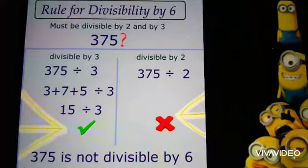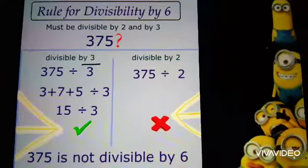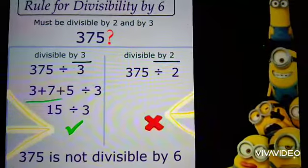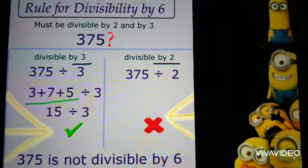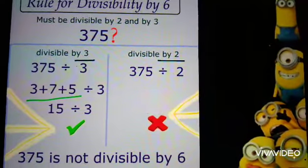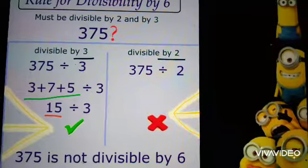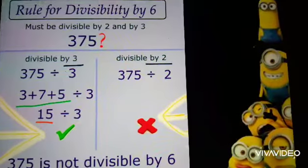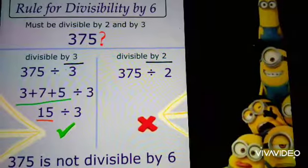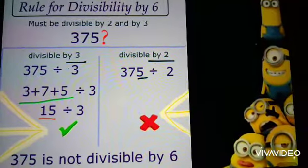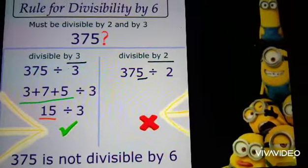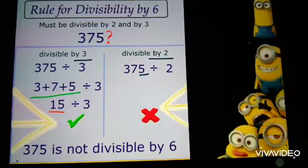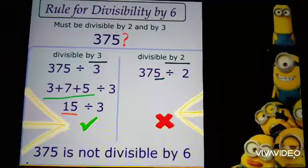A number is divisible by 6 if it is divisible by both 3 and 2. First, we will check the divisibility test by 3 — we will add all the digits. Suppose in 375, we add 3 plus 7 plus 5. The sum of these digits is 15. Since 15 is divisible by 3, this number is also divisible by 3. Now we will check divisibility by 2. In 375, the ones place is 5, so it is not divisible by 2. Therefore, 375 is not divisible by 6. That means, when we check the divisibility test by 6, we must check divisibility by both 2 and 3.